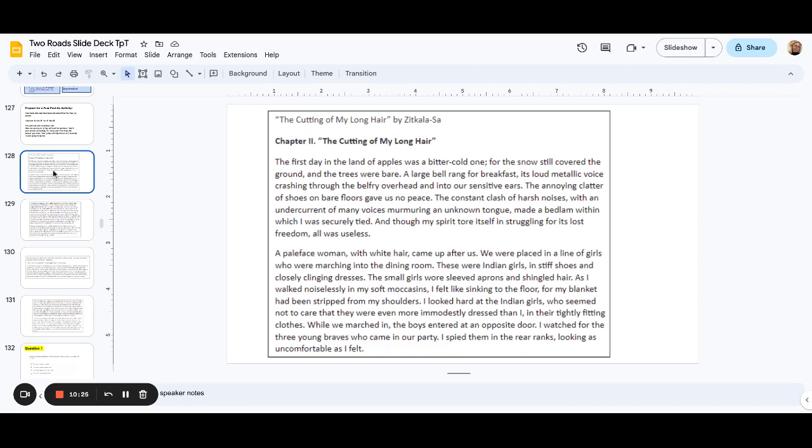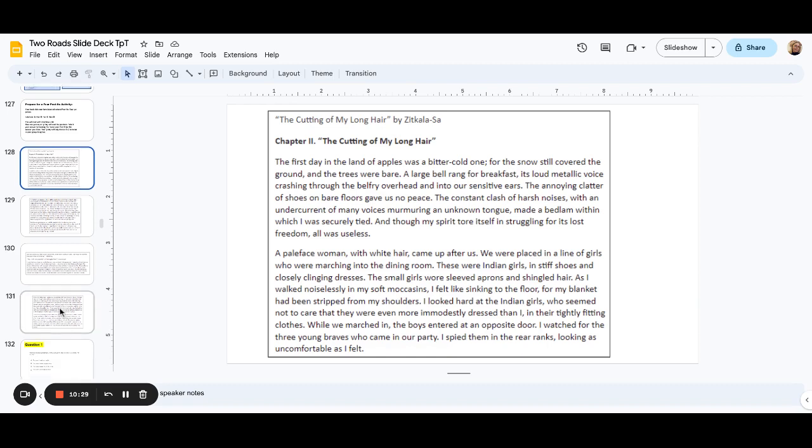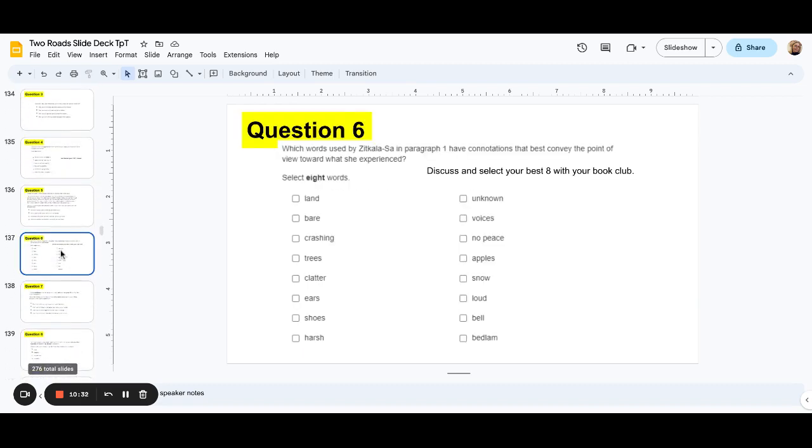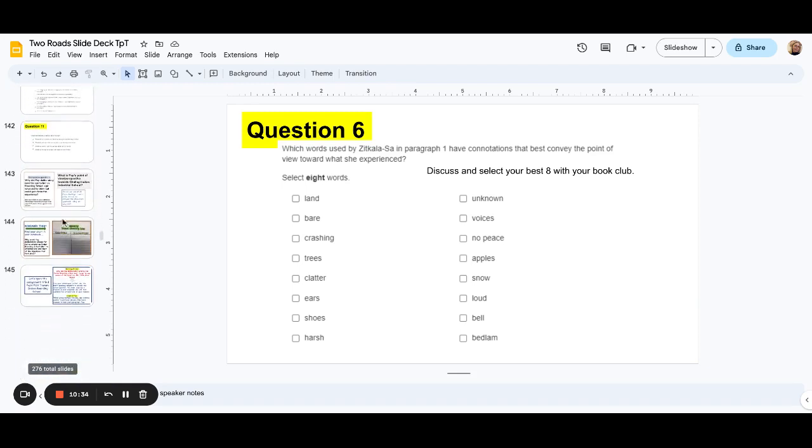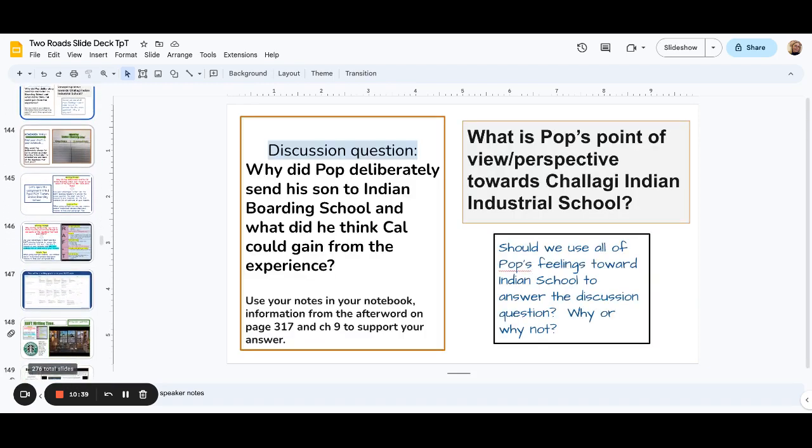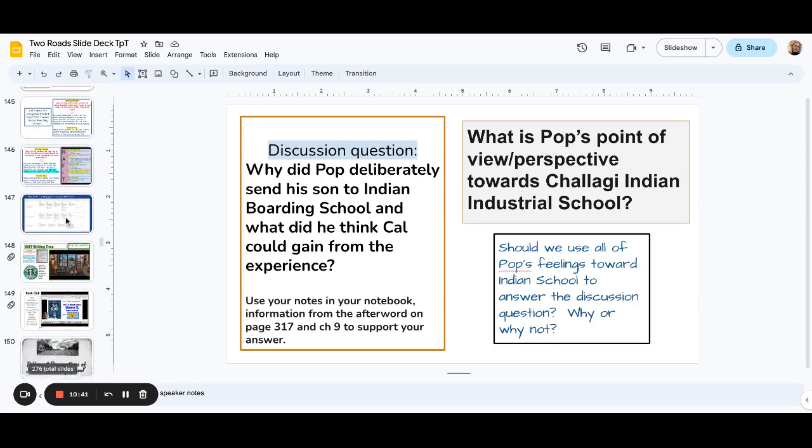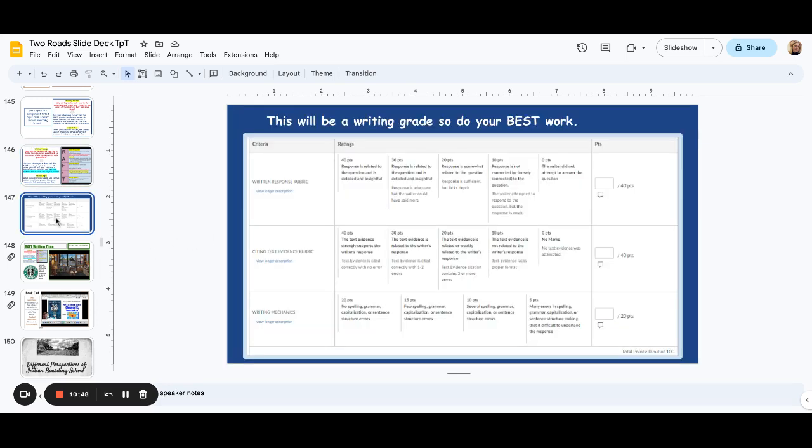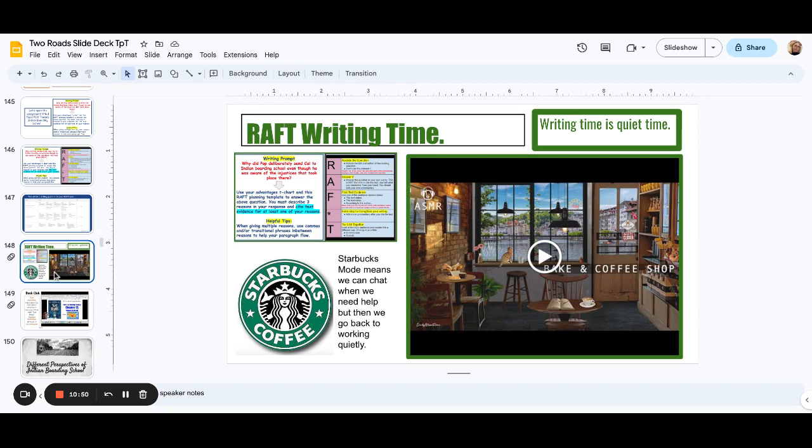Here's another analysis. This is the second chapter of Zitkala Saw's memoir, so they analyze it more. There's questions all through here for the kids to answer. And then writing a raft. That's just a paragraph written response. Here's a prompt, here's a template for how to write a raft, here's a rubric, and then a slide for raft writing time.